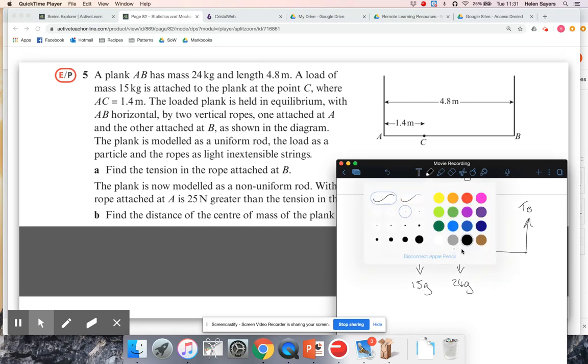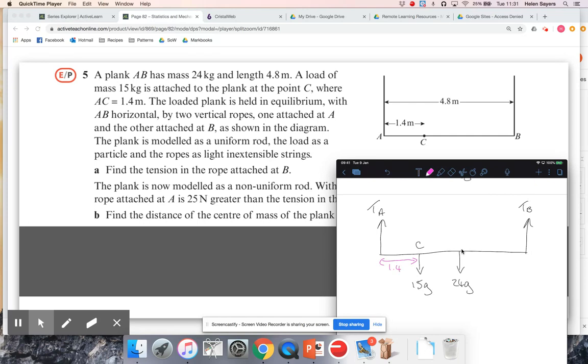So let's label on those lengths. So they told me that that is 1.4 metres, and then we're modeling it as a uniform rod. So if the total length of the rod is 4.8, that is going to be 2.4, half of that.